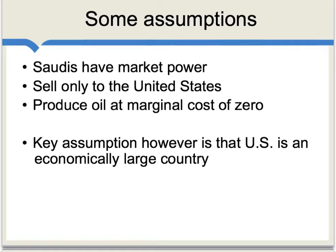To make this as simple as possible, let's use some assumptions. We'll assume that the Saudis have market power over oil, that they are selling only to the United States, and also that the Saudis are producing oil at a marginal cost of zero. The point is not that these are realistic, but that they help us focus on the key mechanism behind optimal tariff theory. The key assumption is that the United States is an economically large country, in the sense that its buying decisions, its taxes, its policies can affect global prices as a whole.